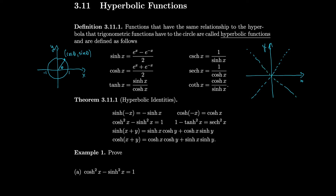So this looks something like this — that's our unit hyperbola. This is at 1, that's at minus 1. Any point over here will be cosh of a and sinh of a, where that value a is actually double this area right over here. This area over here is a over 2.